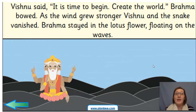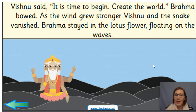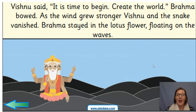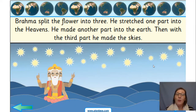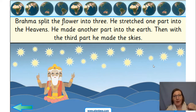Vishnu said, 'It is time to begin. Create the world.' And Brahma bowed. As the wind grew stronger, Vishnu and the snake vanished. But Brahma stayed in the lotus flower, floating on the waves. Brahma split the flower into three. He stretched one part into the heavens and another part into the earth. And then with the third part, he made the skies. So he had the heavens and the earth and then the sky in between.